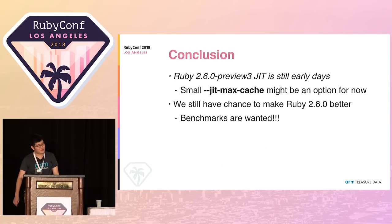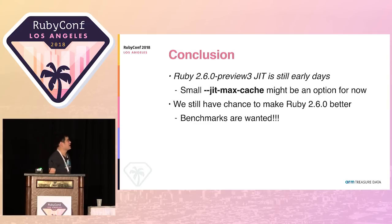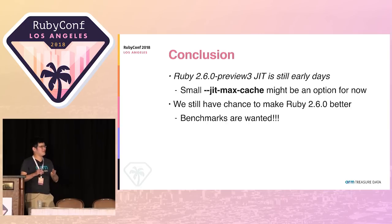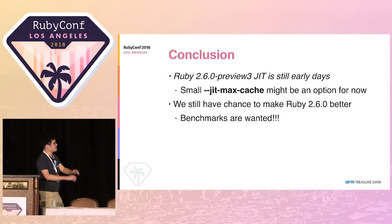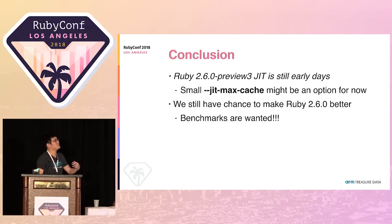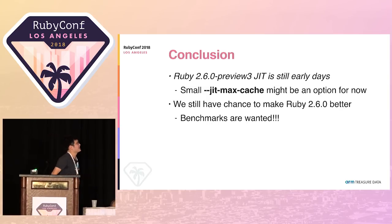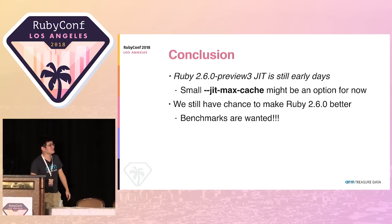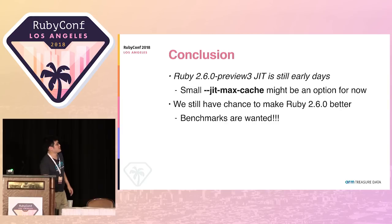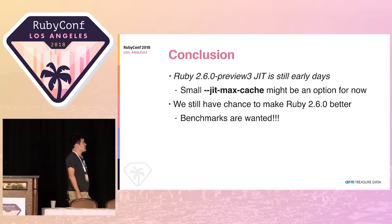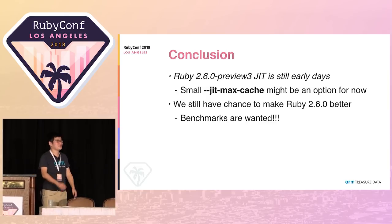In conclusion: Ruby 2.6 JIT is still experimental. But if we couldn't improve it enough, we can use a smaller JIT max-cache compared to 10,000 methods to reduce memory pressure, or trigger earlier JIT compaction. We still have time to improve Ruby 2.6, so benchmarks are welcome. Thank you.